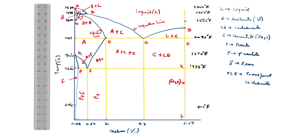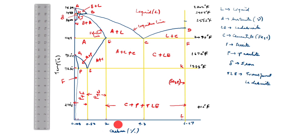This line is pearlite plus cementite (P + C), or Fe3C. From here to here, and then here to here, the whole region is cementite plus pearlite plus transformed ledeburite (C + P + TLE). C is cementite, P is pearlite, TLE is transformed ledeburite. Up to 2% carbon is steel; 2 to 6.67% carbon is cast iron.